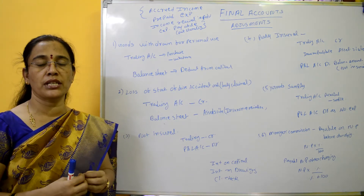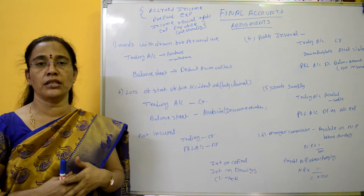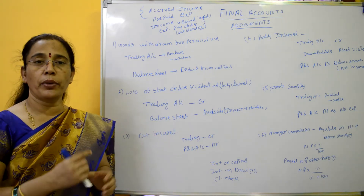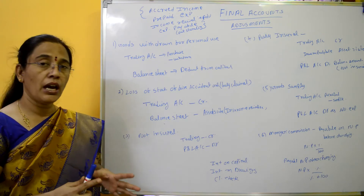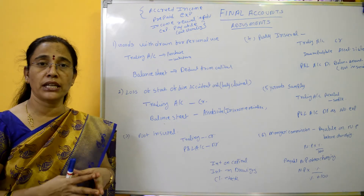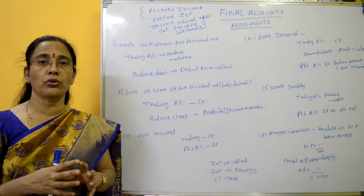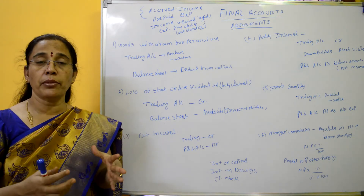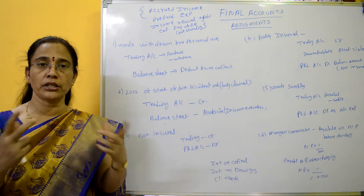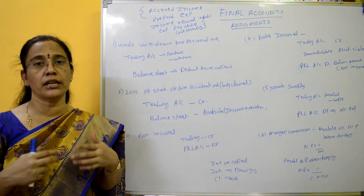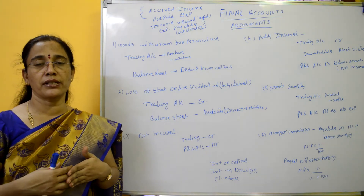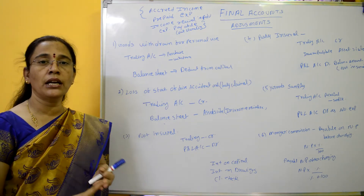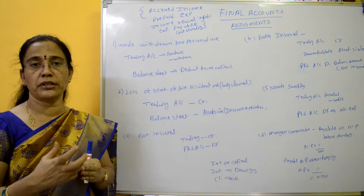Next is goods distributed as samples, free of cost. We have to reduce the value in the trading account. If we use samples, we use products distributed free to the public — that is advertising. We treat that as advertising expenses, debit in the profit and loss account, and reduce purchases.